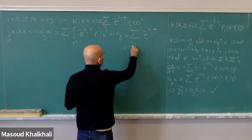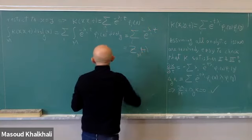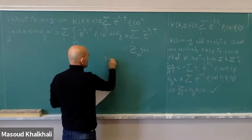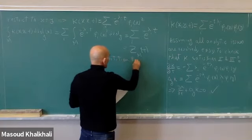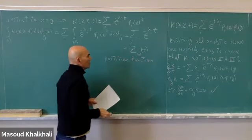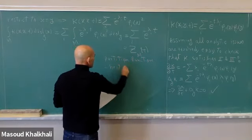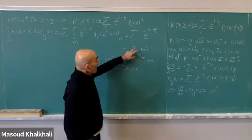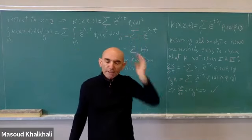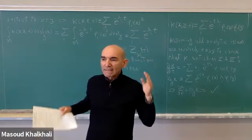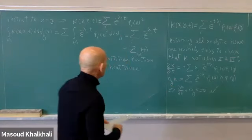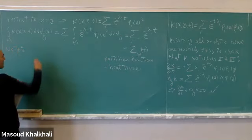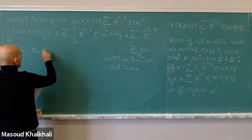Integrating K(x,x,t) over M with respect to dV_g(x), because the φᵢ are an orthonormal basis the integrals ∫φᵢ²dV_g equal one, giving us the sum over i of e^{-λᵢt}. We call this Z(M,t) — the partition function, also called the heat trace. This function is completely determined by the spectrum; it has nothing to do with anything else except the spectrum of the manifold. So Z(M,t) is a spectral invariant.